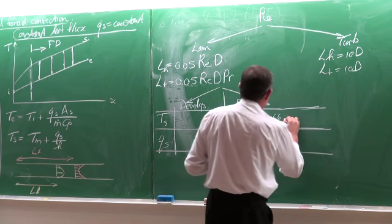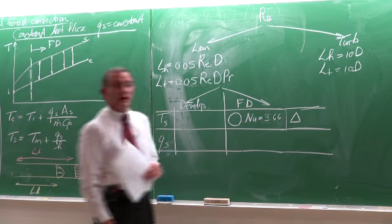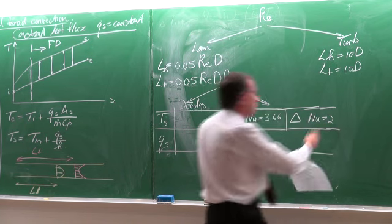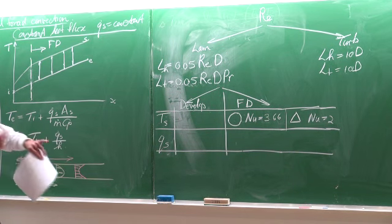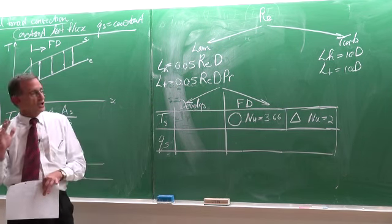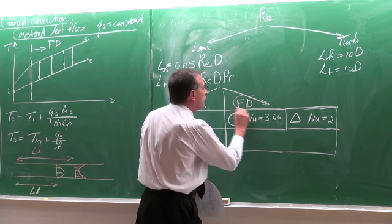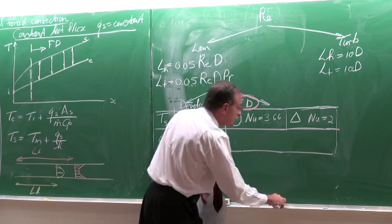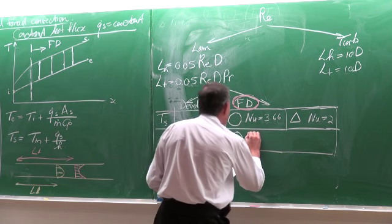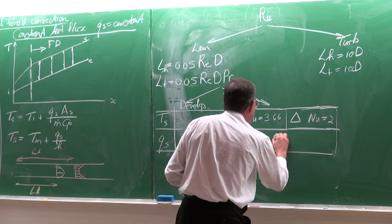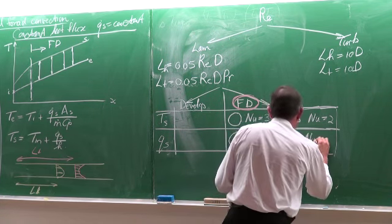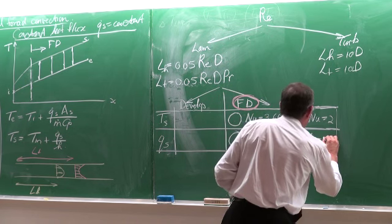For example, if it is a circular tube with constant wall temperature, the Nusselt number equals 3.66. For a triangular geometry, the Nusselt number might be 2. For constant heat flux in a circular tube, the Nusselt number is 4.36. For a triangular cross-section it is approximately 2.68. Table 8.1 in Cengel's textbook gives Nusselt numbers and friction factors for different geometries, though more values are available in literature.